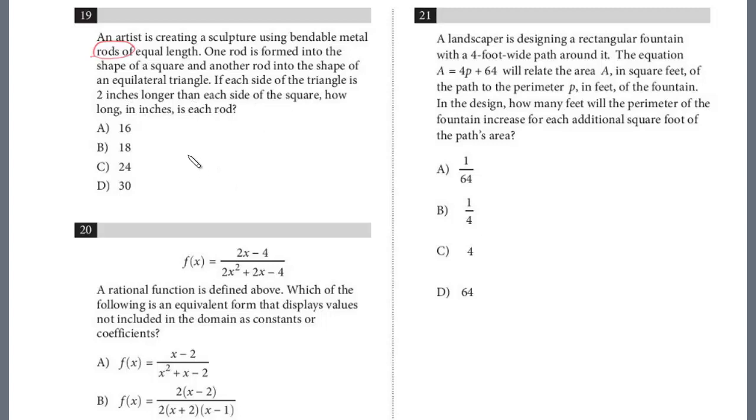So we could make a diagram to help illustrate it. So we have a square, and we're just going to call these sides. So there's four s's. And this equilateral triangle, it's two inches longer, each side, than the square. So we're going to call it s plus 2.